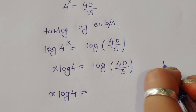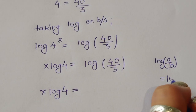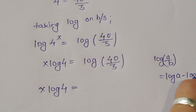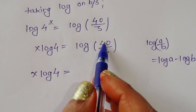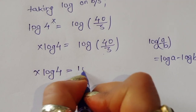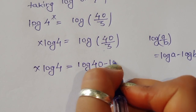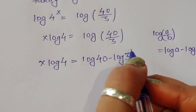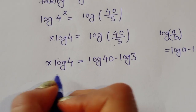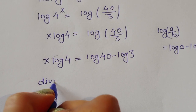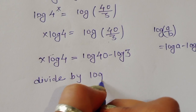Now we apply the formula log(a/b) equals log(a) minus log(b). Using this formula, x·log(4) equals log(40) minus log(3). To isolate x, we divide both sides by log(4).